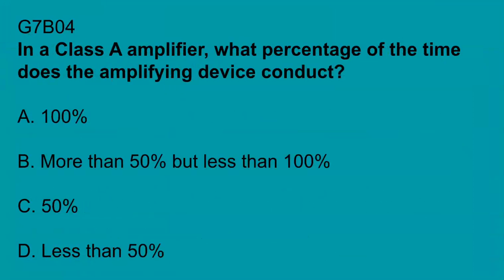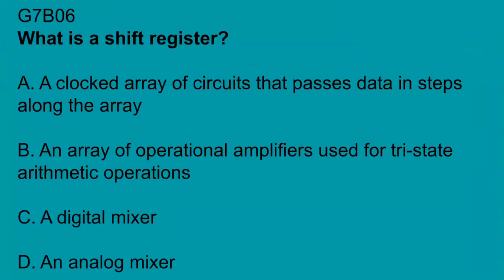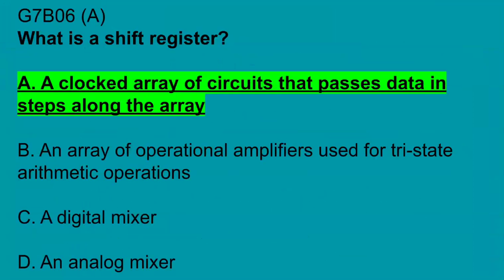G7B04, in a class A amplifier, what percentage of time does the amplifying device conduct? 100%. G7B05, how many states does a 3-bit binary counter have? 8. G7B06, what is a shift register? A clocked array of circuits that passes data in steps along the array.